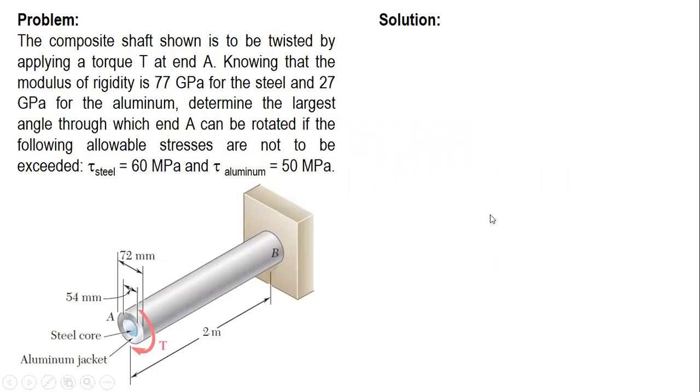Here is the problem. The composite shaft shown is to be twisted by applying a torque T at end A. Knowing that the modulus of rigidity is 77 GPa for the steel and 27 GPa for the aluminum, determine the largest angle through which end A can be rotated if the following allowable stresses are not to be exceeded.